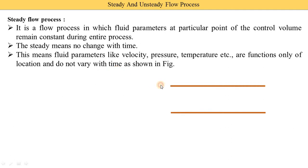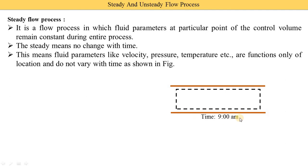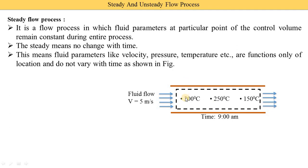Here you see there is one pipe. In this pipe we consider an area for our study — that is called the control surface. We are studying that particular pipe at 9 a.m. From this pipe, suppose water or any fluid is flowing at a velocity of 5 meters per second. This is the inlet and this is the outlet. We measure the temperature at three different points: at the first point temperature is 300, at the second point it is 250, and at the third point it is 150.